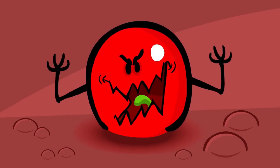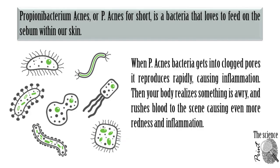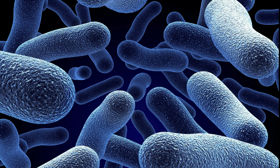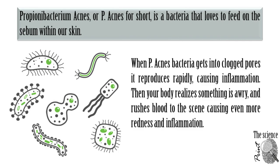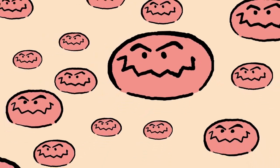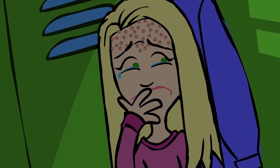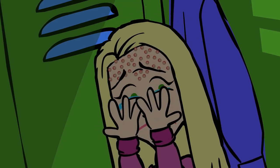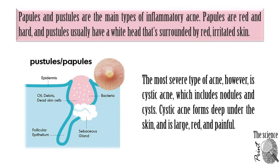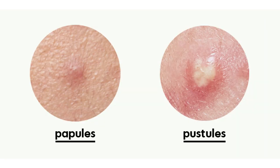Inflammatory acne. Propionibacterium is a bacteria that loves to feed on the sebum within our skin. When the bacteria gets into clogged pores, it reproduces rapidly causing inflammation. Then your body realizes something is awry, and rushes blood to the scene, causing even more redness and inflammation. Papules and pustules are the main types of inflammatory acne. Papules are red and hard, and pustules usually have a whitehead surrounded by red irritated skin.